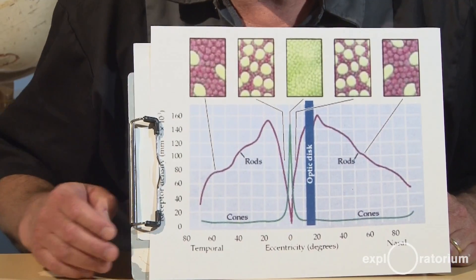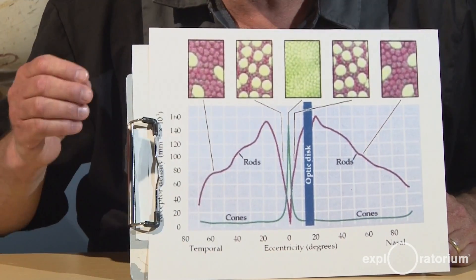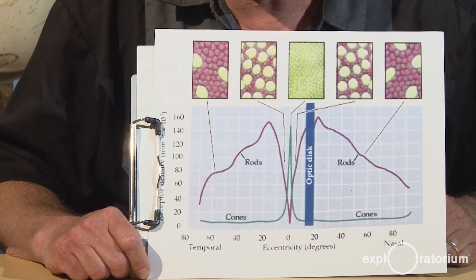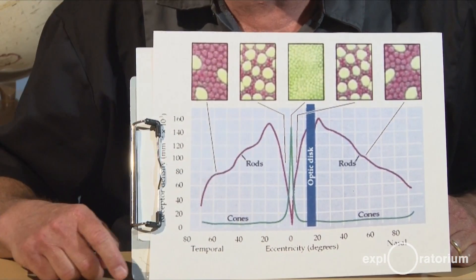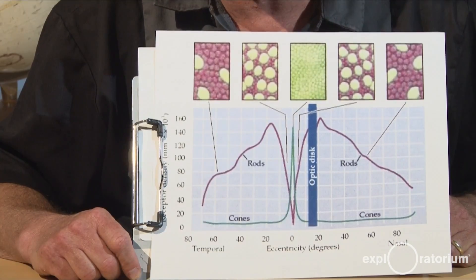Scientists refer to your fovea, which is packed with millions and millions of cones, as the most valuable real estate in your body. It's where you see the world perfectly clear, and that's the only place you see it perfectly clear.